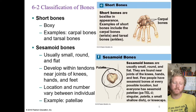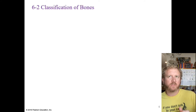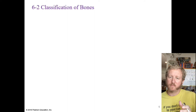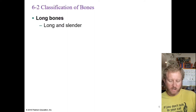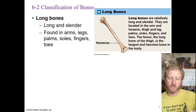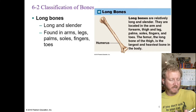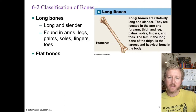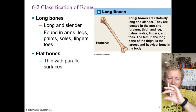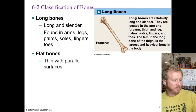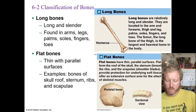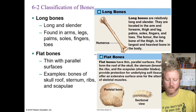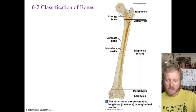Long bones are long and slender — those are the classic bones you picture, like skull and crossbones. They're found in the arms, legs, fingers, and toes. Examples include the humerus and the femur. Flat bones are thin with parallel surfaces and are typically irregularly shaped; examples include the bones of the skull, the sternum, and the scapula.